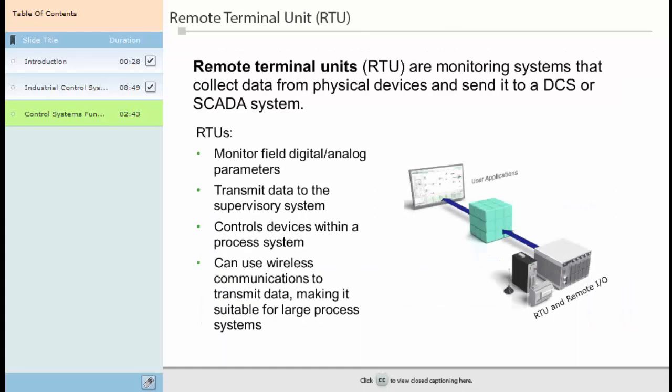Remote Terminal Units are monitoring systems that collect data from physical devices and send it to a DCS or SCADA system. RTUs also receive instructions from the supervisory system to control the devices within a process system. RTUs monitor field digital/analog parameters, transmit data to the supervisory system, control devices within a process system, use wireless communications to transmit data, making it suitable for large process systems. Examples of RTUs can be found in systems like outdoor warning sirens, air traffic equipment, and electrical power or natural gas networks.